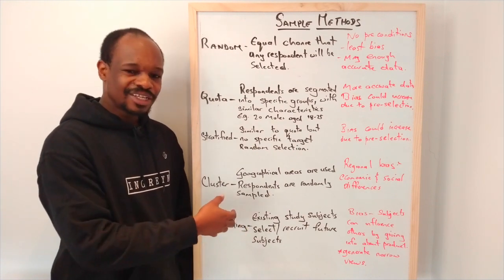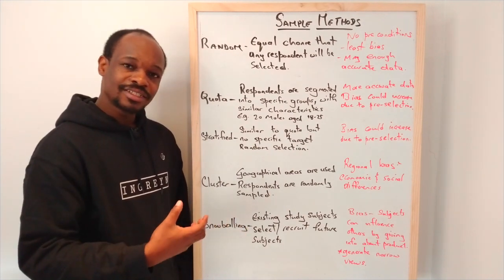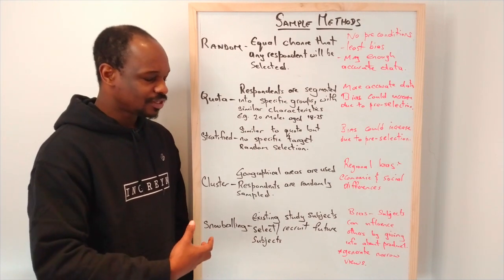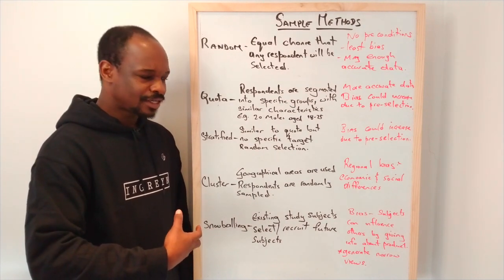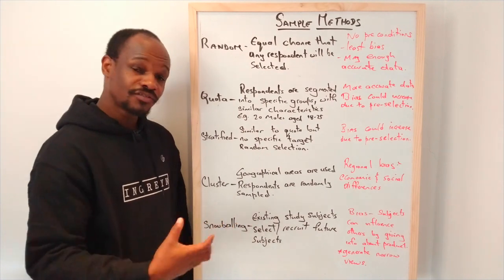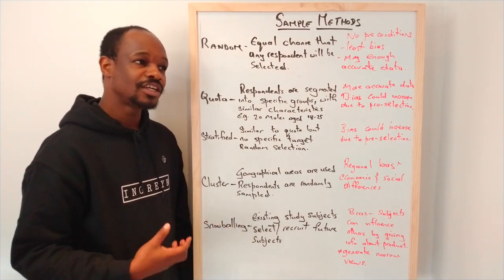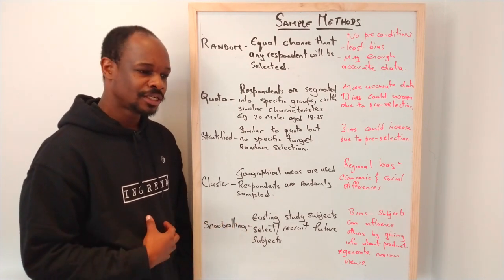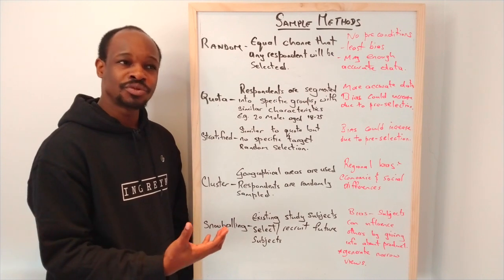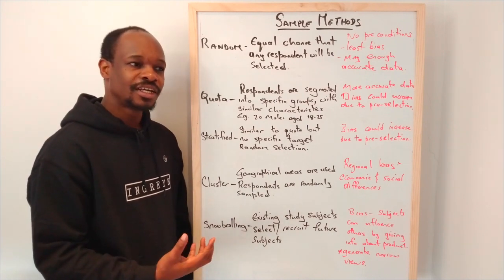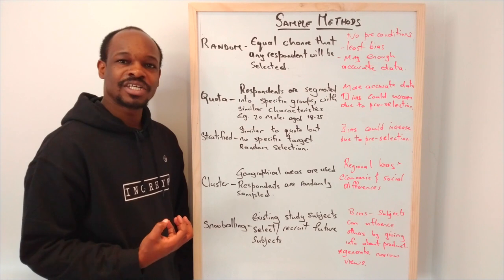When you have that, it can create a bias where the subjects can influence others. You can give them information about it, you can choose who you feel might fit, and that can give information that might not be entirely correct.